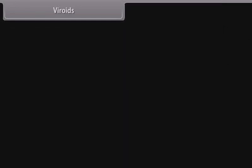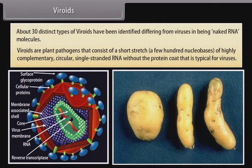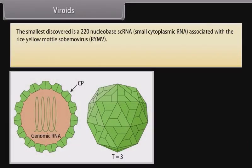About 30 distinct types of viroids have been identified, differing from viruses in being naked RNA molecules. Viroids are plant pathogens that consist of a short stretch — a few hundred nucleobases — of highly complementary, circular, single-stranded RNA without the protein coat typical for viruses. The smallest discovered is a 220-nucleobase scRNA (small cytoplasmic RNA) associated with the Rice Yellow Mottle Sobemo virus (RYMV).